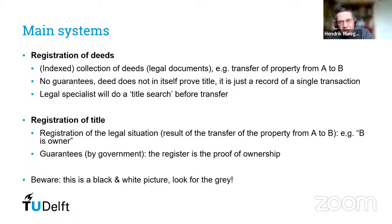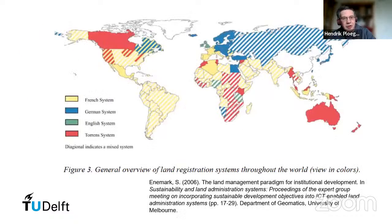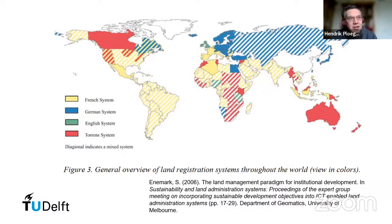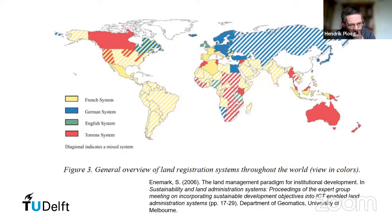Keep the black and white picture in mind, but also keep in mind there are gray colors. Now we go to a more colorful, general overview of land registration systems. STIG NMR calls it land registration systems — and remember I told you that this is a bit confusing because people use all sorts of words for the same thing. In Europe you have the German system in Scandinavia and Central Europe, while the legacy of Napoleon means the Netherlands, Belgium, France, Italy, Spain, and Portugal have the French system — which is registration of deeds.